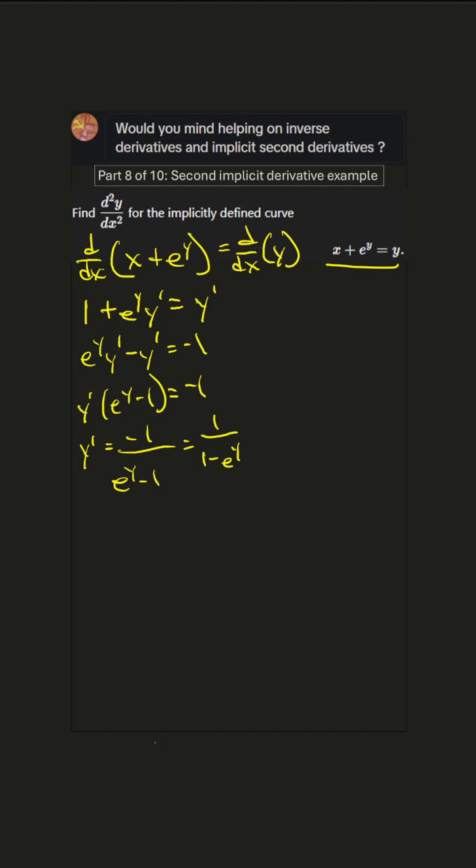Let's go for y double prime. We have to take the derivative again, d/dx of both sides. Let's bring this up top to make it simpler to work with, so that'll be 1 minus e to the y to the negative 1 power.